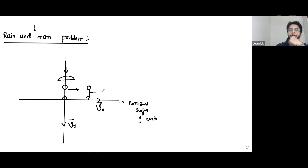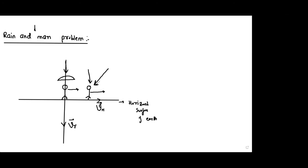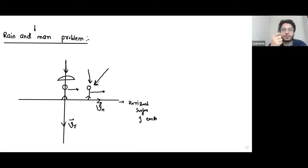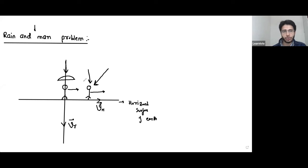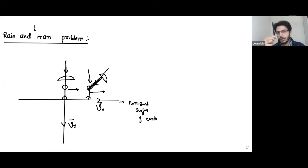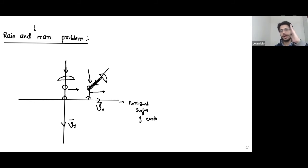Have you ever experienced that if you are moving horizontally, do raindrops still fall vertically downwards or do you experience them at some angle? When you are at rest, you can save yourself from rain by holding the umbrella vertically. But if you start running or riding a two-wheeler while holding it vertically, you will get wet. You will observe that raindrops appear to come at some angle — not vertically. That is why you tilt your umbrella.